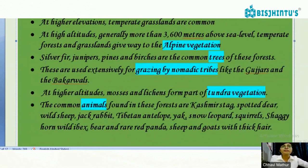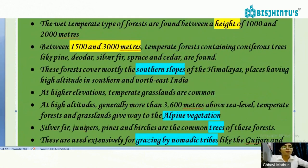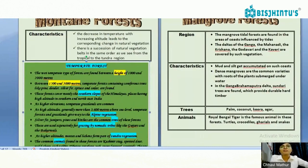In alpine regions, common trees can be seen and these areas are very important for nomadic tribes like Gujjars and Bakarwals, who bring their herds here for grazing. You can also see some common animals found here. Please write your answers in this format — covering characteristics, regions, animal species, plant species, and height.